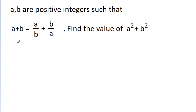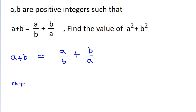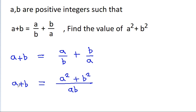So we have given that a plus b is equal to a by b plus b by a. We can take ab as the common denominator and get a plus b equals a squared plus b squared all over ab. If we multiply both sides by ab, we get ab times a plus b is equal to a squared plus b squared.